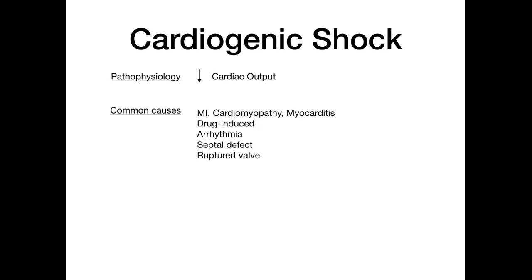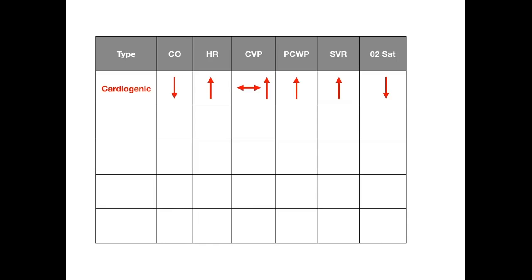For the up-down arrows in cardiogenic shock: cardiac output is down, but heart rate is up to compensate. Central venous pressure is unchanged or increased. Pulmonary capillary wedge pressure is increased because fluid that can't be pumped sits in the pulmonary capillaries. Systemic vascular resistance is up as part of compensation. Oxygen saturation is down.